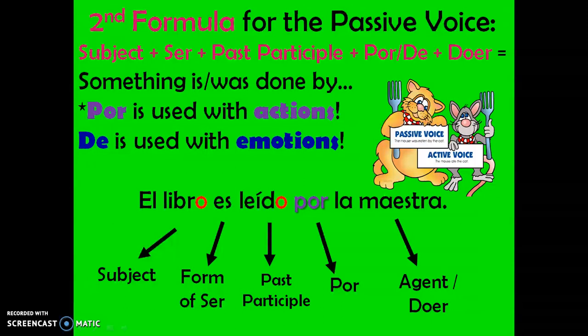We have: el libro es leído por la maestra. Our subject is el libro. Our form of ser is es. Leído is our past participle, which we'll talk about how to form in just a minute. The past participle is always going to agree with your subject, so it acts like an adjective. We chose por because being read is an action, not an emotion. And our agent or doer is la maestra.